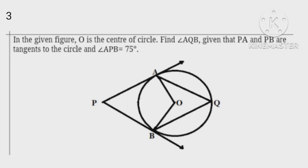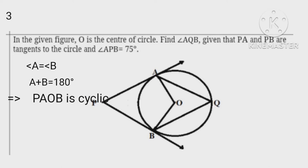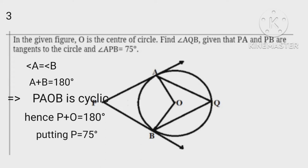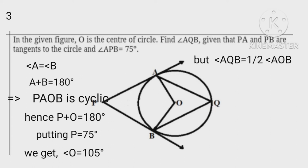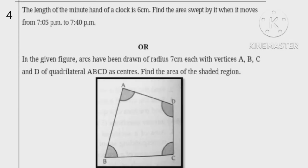We have the given figure where angle A equals angle B. Therefore A plus B equals 180 degrees, which implies that PAOB is cyclic. Hence angle P plus angle O equals 180 degrees. Putting angle P equals 75 degrees, we get angle O equals 105 degrees. But angle AQB equals one half of angle AOB, therefore angle AQB equals 105 divided by 2 equals 52.5 degrees.